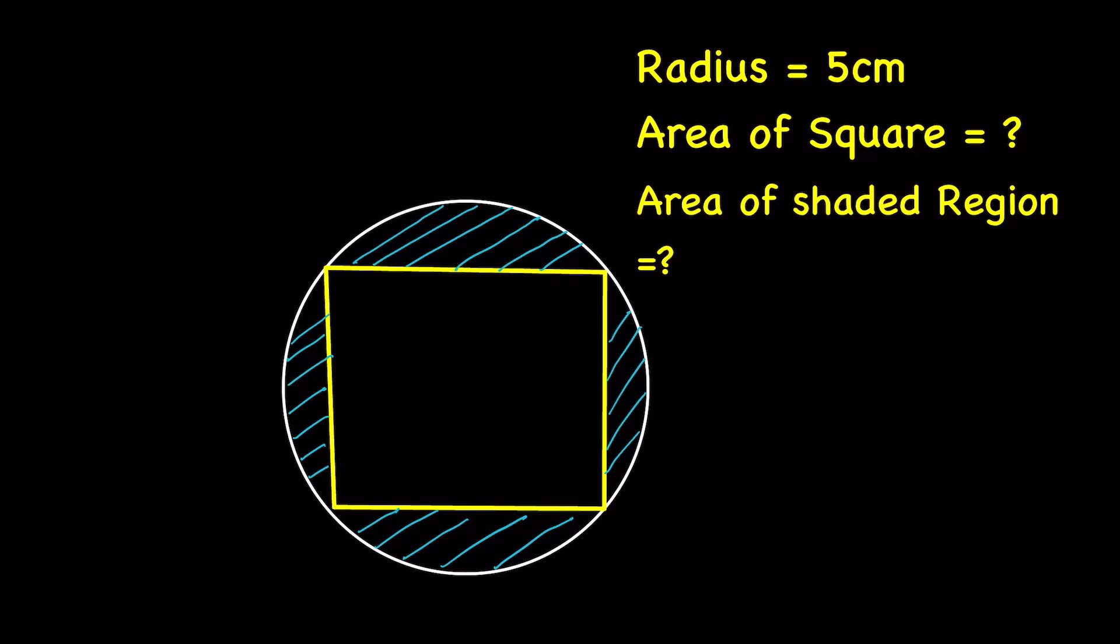Given in this question is a circle and there is a square inscribed within the circle. Radius of the circle is 5 cm. We have to find the area of square as well as the area of the shaded region.